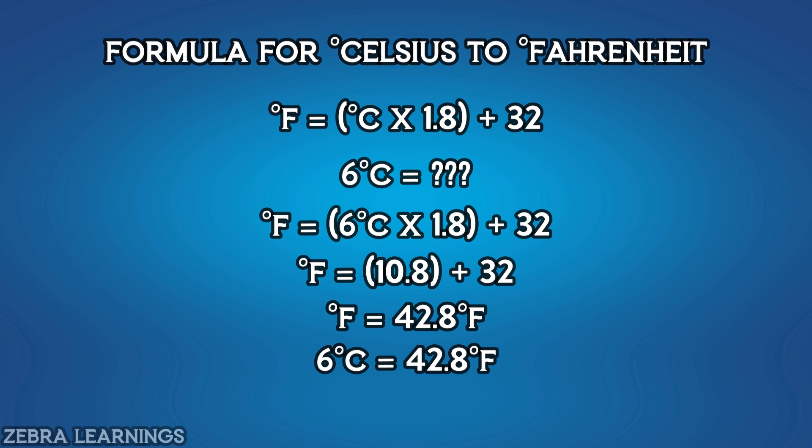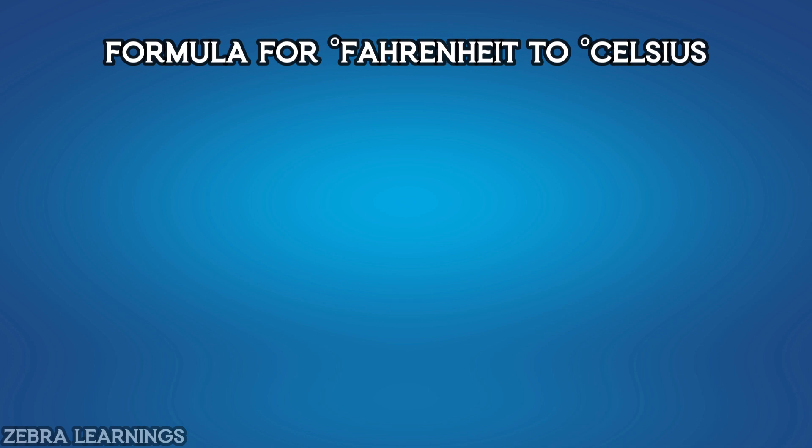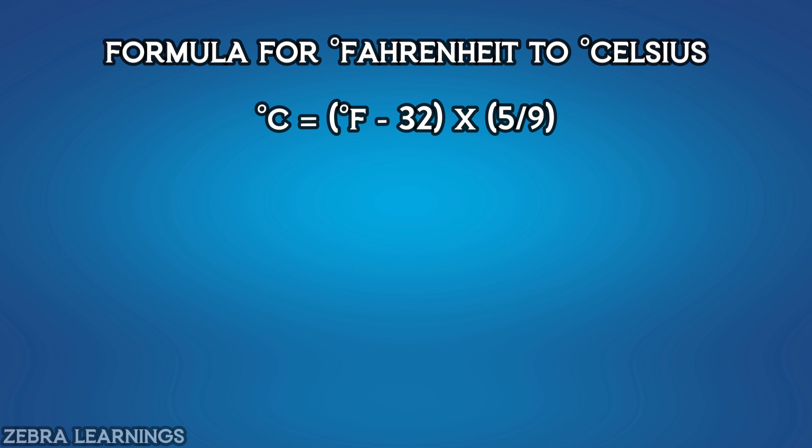Now let's see how to convert from degree Fahrenheit to degree Celsius. The formula to convert from degree Fahrenheit to degree Celsius is: Degree Celsius equals degree Fahrenheit minus 32, multiplied by 5 divided by 9.